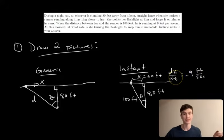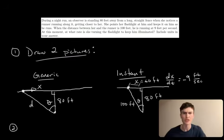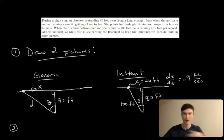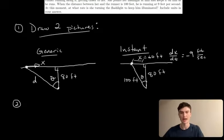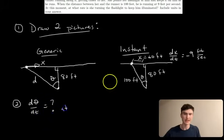That completes step 1 — we've drawn our two pictures. Step 2 is to identify the goal. Looking back at the problem: at this moment, what rate is she turning the flashlight to keep the runner illuminated? So our goal is to find dθ/dt at the instant given.